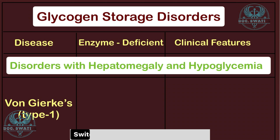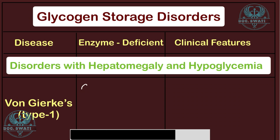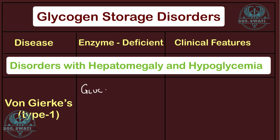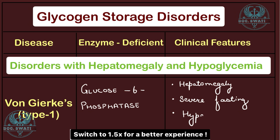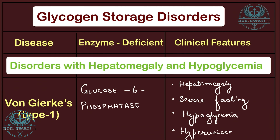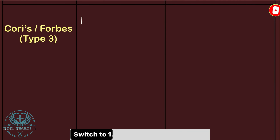We'll start with glycogen storage disorders presenting with hepatomegaly and hypoglycemia. The first disorder is Von Gierke's disease, which is Type 1 glycogen storage disease. It is caused due to the deficiency of glucose-6-phosphatase. Clinical features include hepatomegaly, severe fasting hypoglycemia, hyperuricemia, lactic acidosis, and hyperlipidemia.